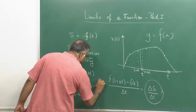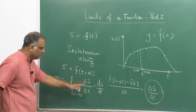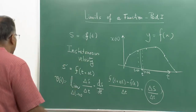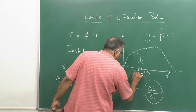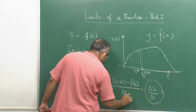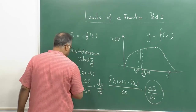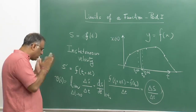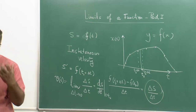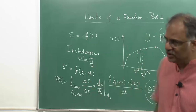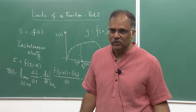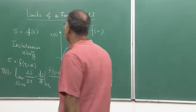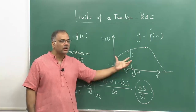The instantaneous velocity is sometimes also written with the symbol d/dt of s, which is called the derivative of the function s with respect to time t, computed at the time t. When Lord Kelvin — whose name you must know for the notion of absolute zero, minus 273 degrees Celsius — was taking a calculus class in Cambridge and people were getting worried about the notion of a derivative, he simply told them: do not get so much worried about it, this is nothing but the velocity.